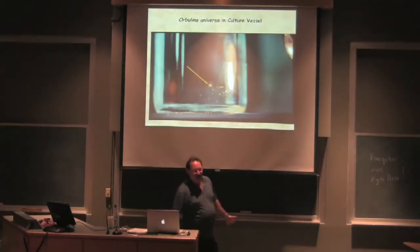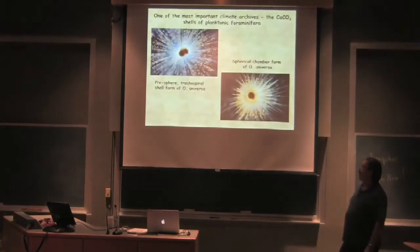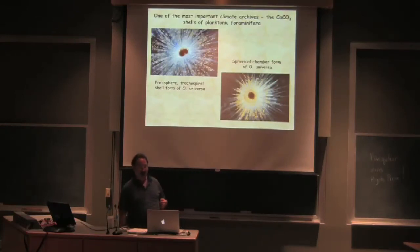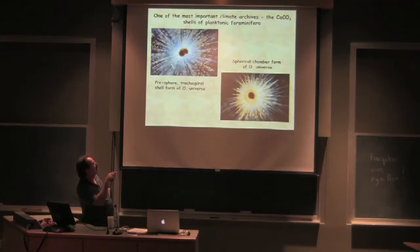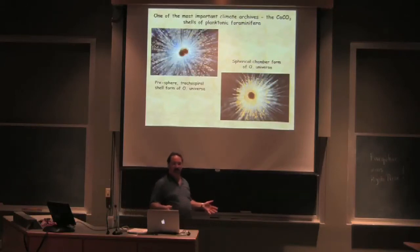This is what a foraminifera looks like in the lab. This is one of these little hundred mil jars. They're very visible. That orange color that it has is the symbionts. And this is what they look like. We use for our rat in the laboratories a species Orbulina universa. The reason we do that is for a variety of reasons, but the best one is because we can collect the species and they make these multiple chambers. Here's the spines and you have all these symbionts around.